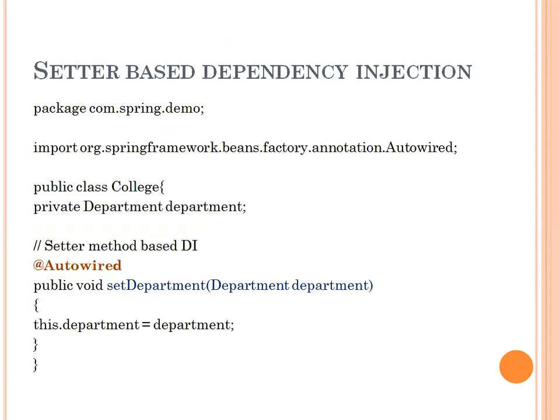Next is setter-based dependency injection. In this class, the class name is College, and it has a dependency on Department. We need to send the Department reference to the class, but here instead of a constructor we have a setter method. In this example you can see setDepartment — we are sending the Department reference to fulfill the dependency. Since we are using the setter method, we use the @Autowired annotation over the setDepartment method.